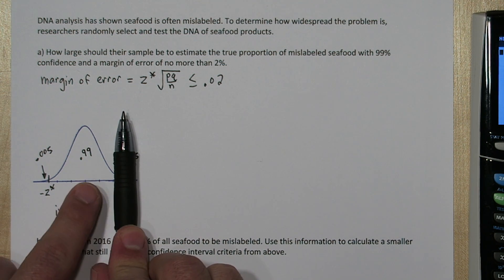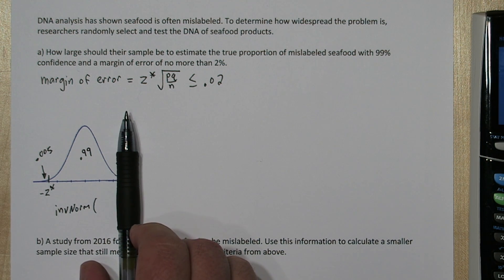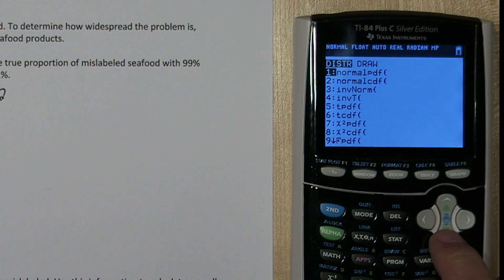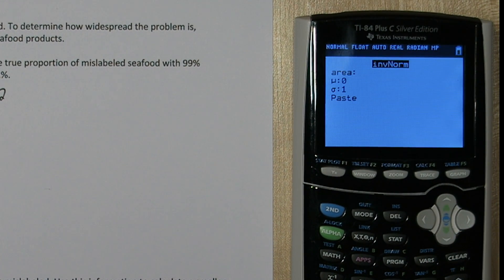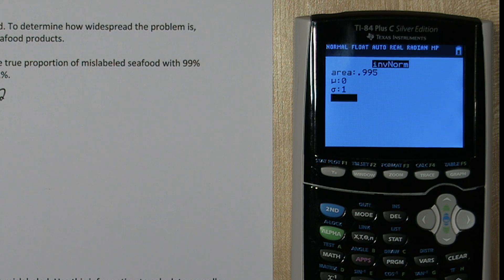We want to cut off actually 0.995, the middle 99% plus this half a percent area in the tail. So here's how to use inverse norm. Press 2nd, then vars, and go down to inverse norm. For area, we're going to put 0.995, and leave this as 0 and 1 for the standard normal distribution.